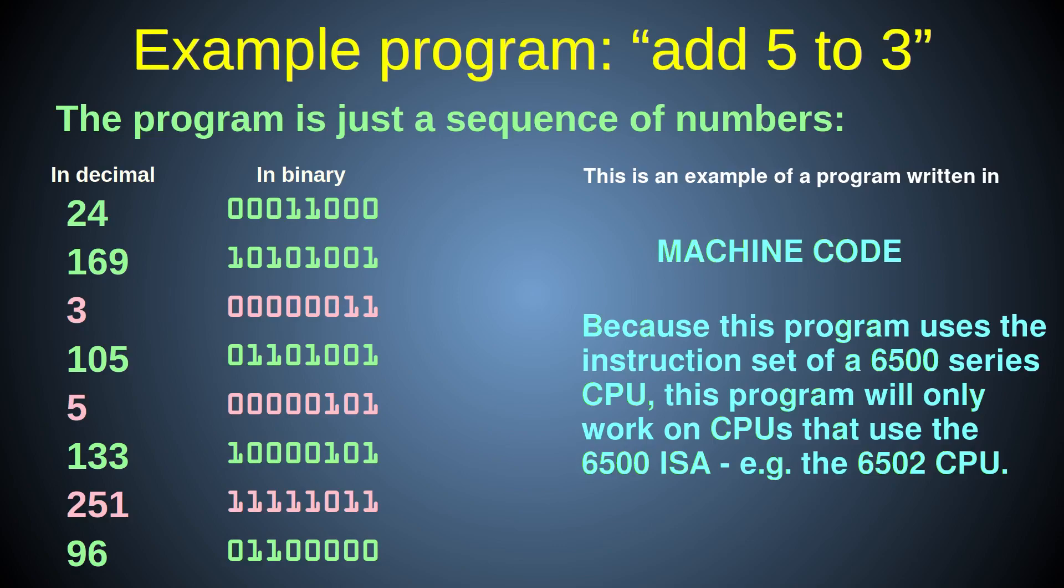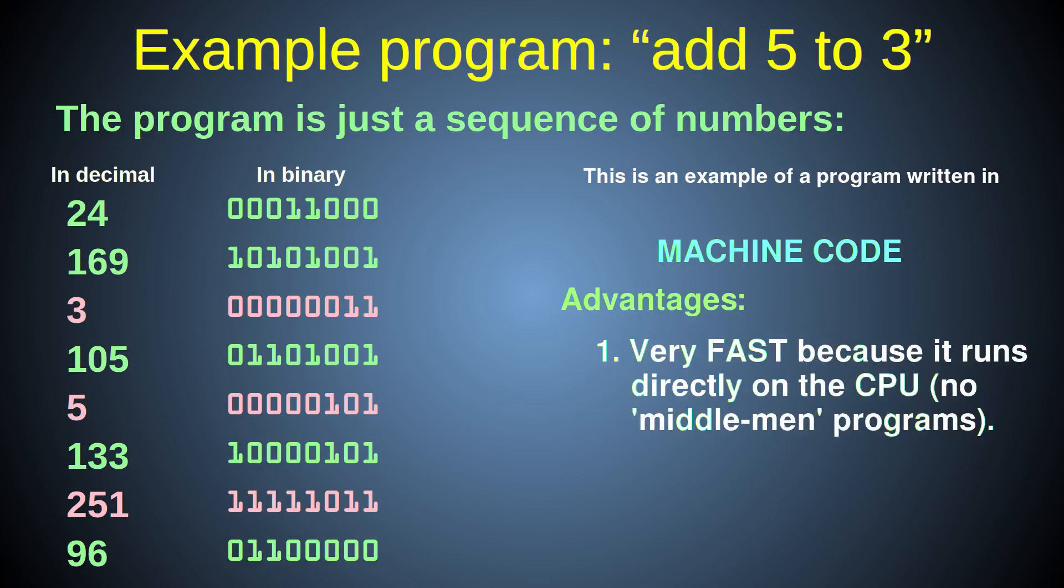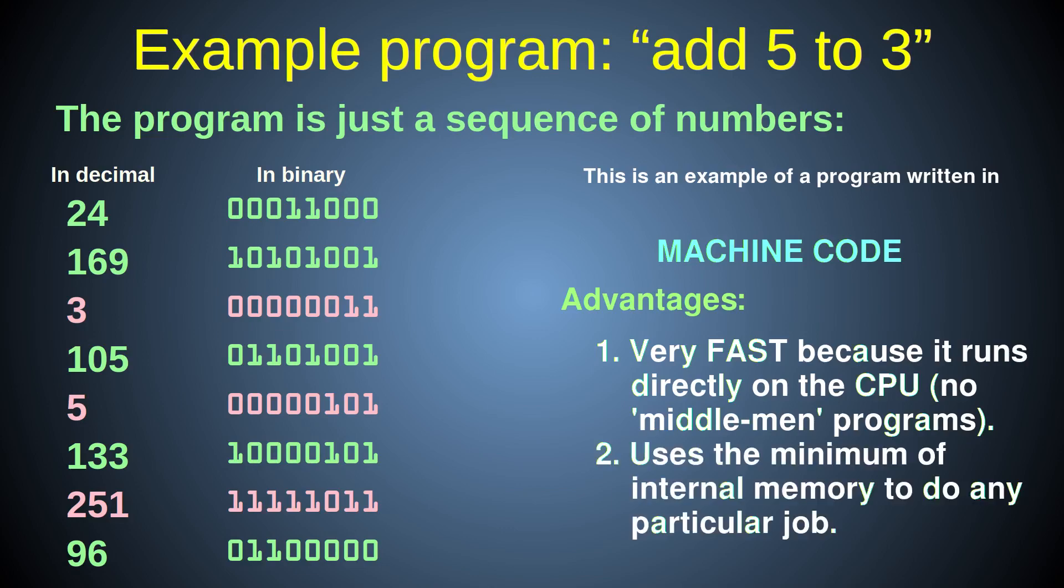Programming this way in the machine code language had the advantage of being very fast for the machine to execute, because there are no intermediate steps involved for the computer to run your instructions. It also takes up the bare minimum of internal memory space to store such a direct program, a factor that was vitally important for early computers that had very little and very expensive internal memory.